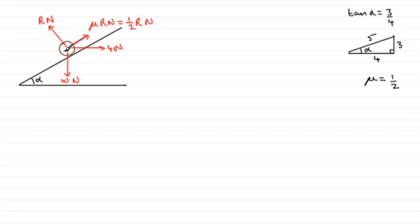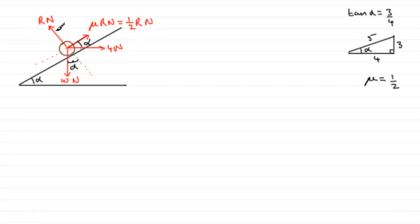When dealing with motion on a plane, I'll draw a dotted line down the slope and a dotted line perpendicular to it, because we're going to look at forces acting parallel to the plane and perpendicular to the plane. The angle between these dotted lines and the horizontal/vertical is going to be exactly the same angle as the plane, alpha. I'm going to resolve up the plane, taking up the plane as positive.